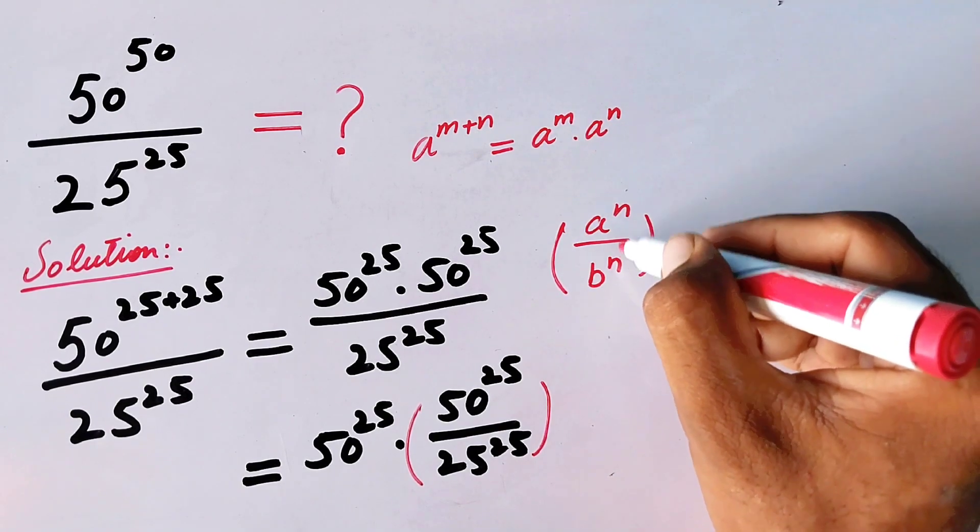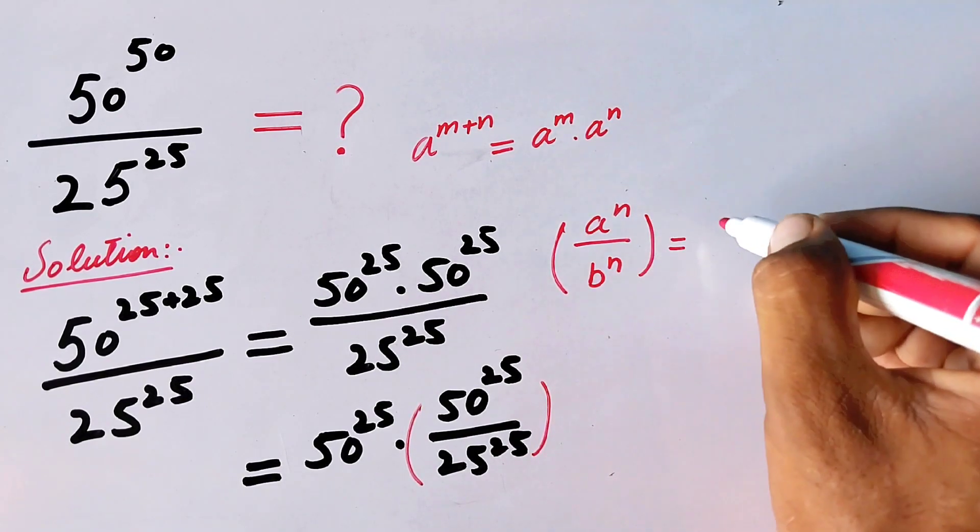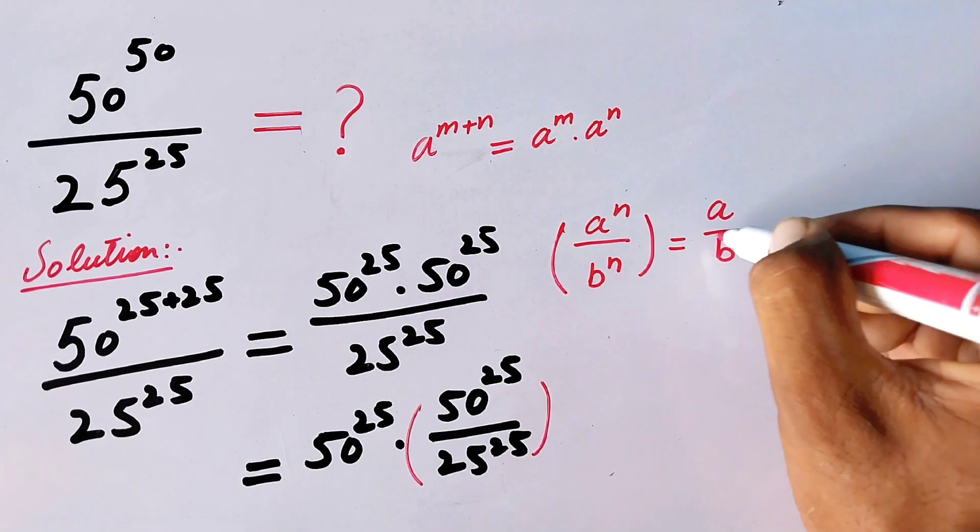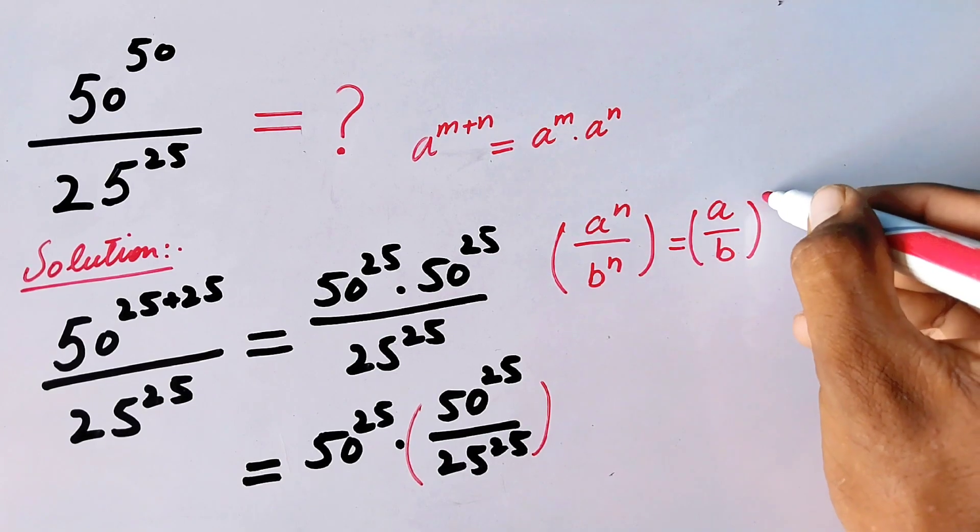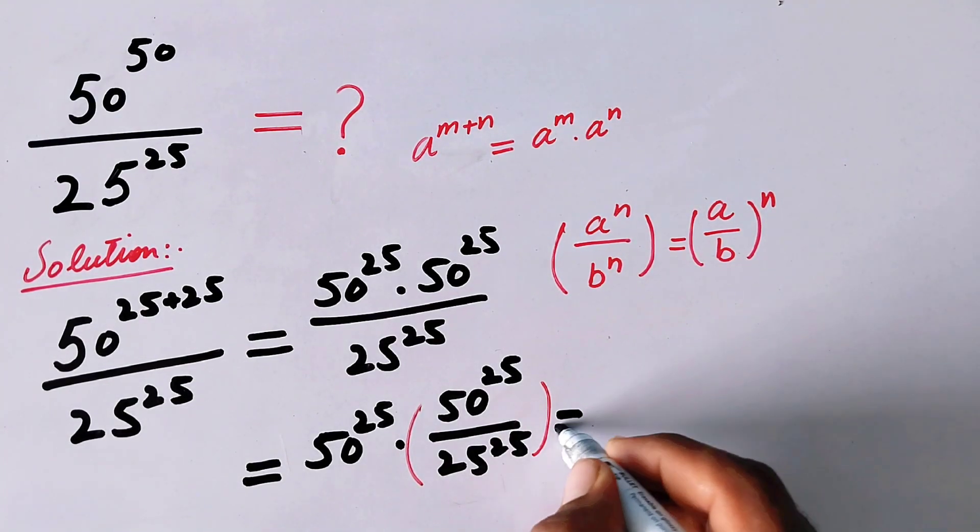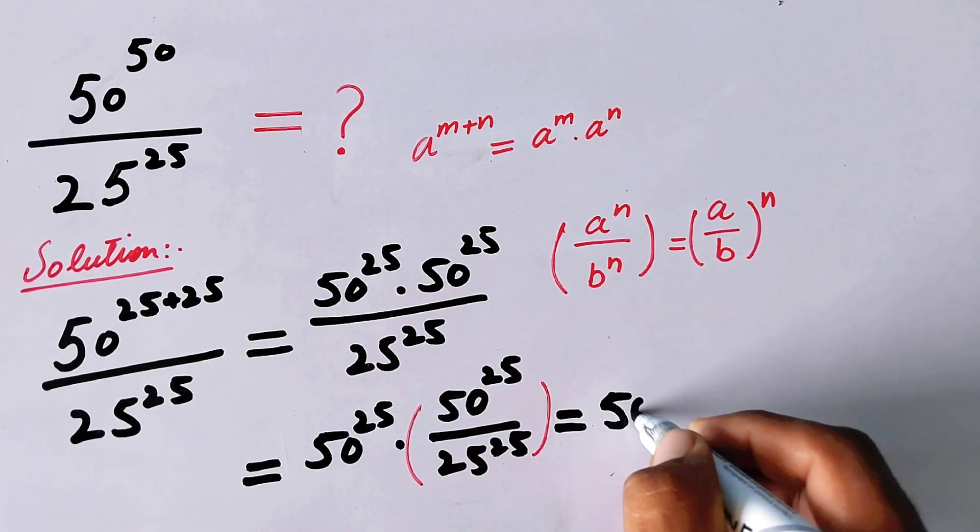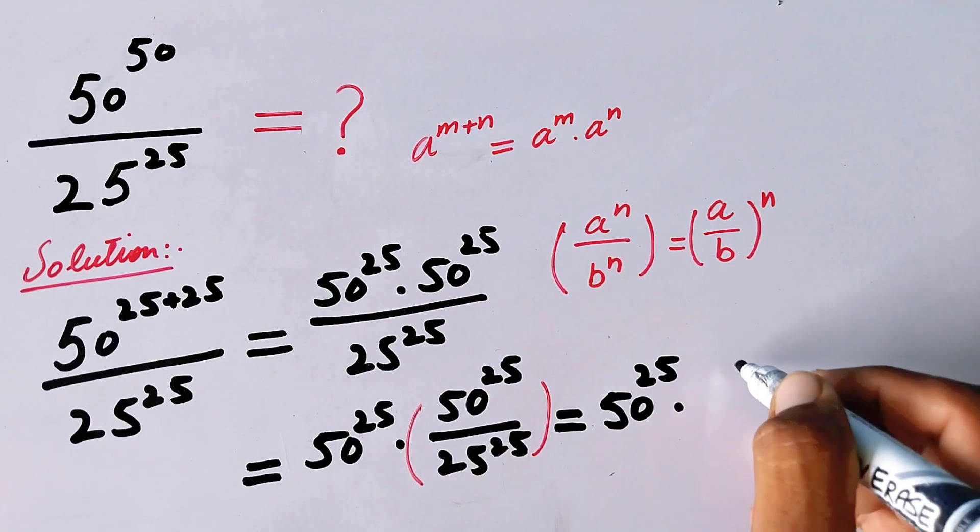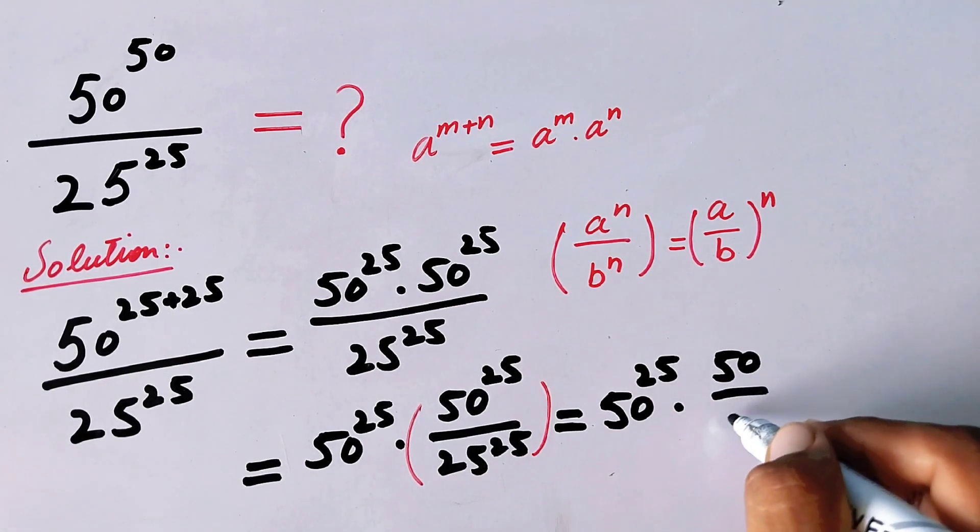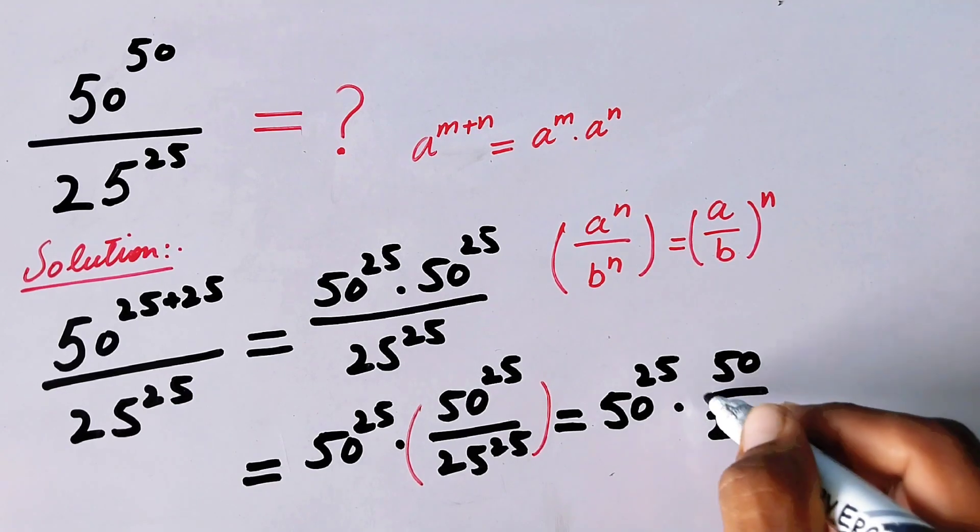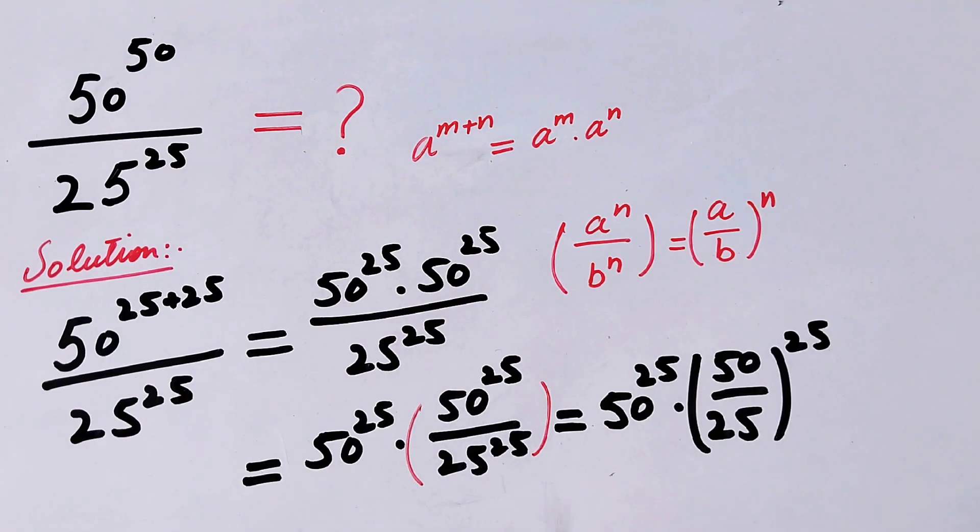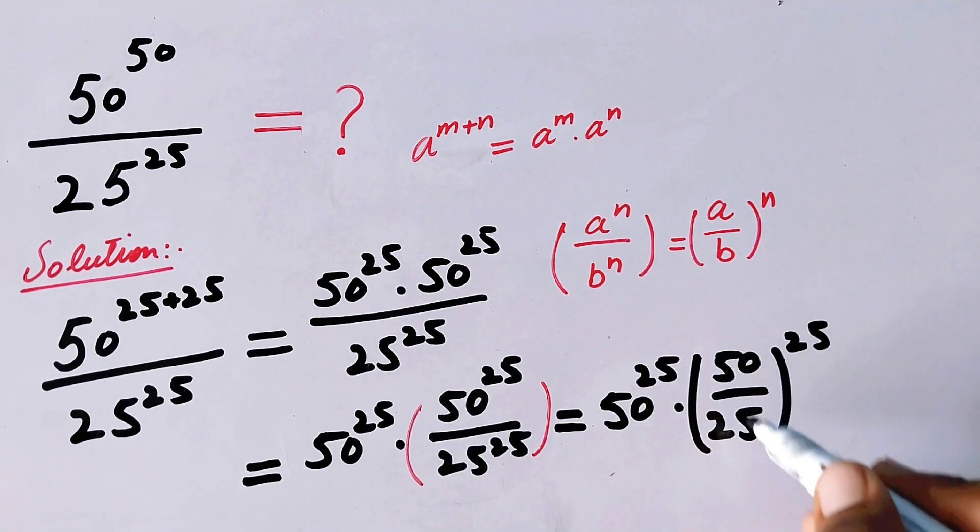So here it will be 50^25 · (50/25)^25. Now, this 50 will be divided by 25 and it will become 2, so we can write 50^25 · 2^25.